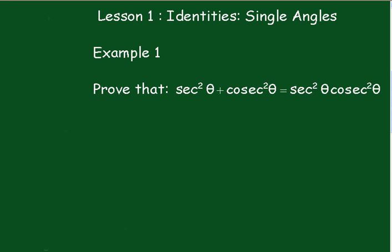Lesson 1: Identities - Single Angles. Example 1. Prove that sec²θ + cosec²θ = sec²θ × cosec²θ.